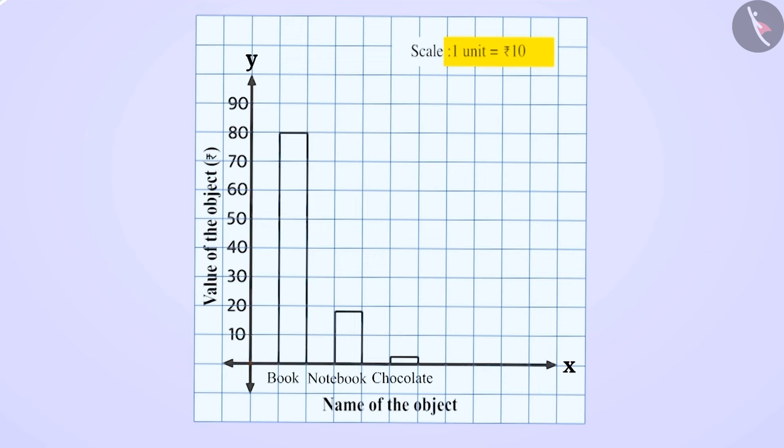To show the value of the objects, bars of uniform width are drawn vertically with equal spacing, uniform distance between them.